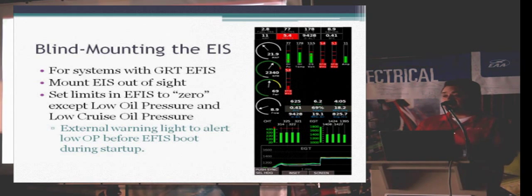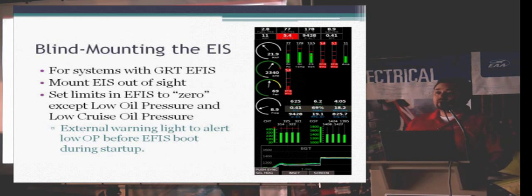The one thing that a lot of people forget is that if you're using a fuel flow on the EIS and you're going to blind mount it and control the fuel totalizer function off of the EFIS, is that you have to physically set the fuel number to zero on the EIS. You can't let it run down to zero and then think that it will work. You actually have to set it at about two and then set it to zero so that it will actually read correctly.